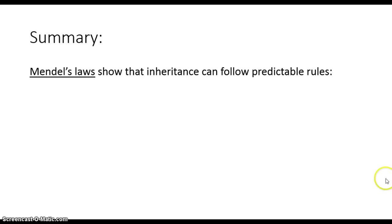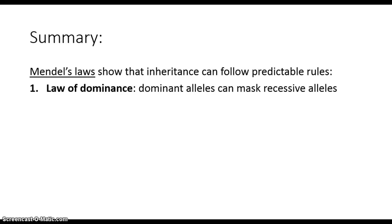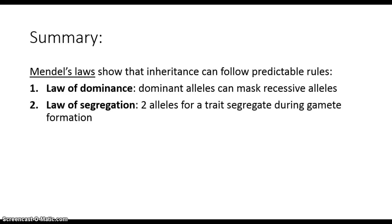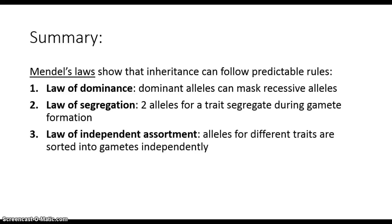So in summary, the process of genetics can be understood by applying Mendel's laws: the law of dominance that certain alleles may mask other recessive ones, the law of segregation that the two alleles for a trait separate during the process of making gametes in meiosis, and the law of independent assortment that the alleles for different traits are sorted into gametes completely independently of each other.